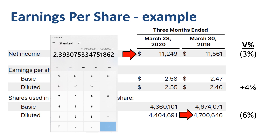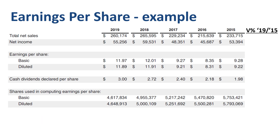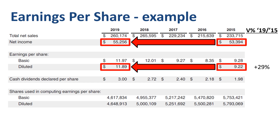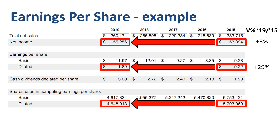Let's do the same EPS analysis for a 5-year period. Here's a 5-year overview of key Apple financial indicators. From 2015 to 2019, earnings per share increased from $9.22 to $11.89 for a full year — a total increase of 29%. Where does the EPS increase come from? Net income increased from $53.4 billion to $55.3 billion, just 3% in total over the 5-year period. The number of shares dropped from 5.8 billion to 4.6 billion, a decrease of 20%. So substantially all of the EPS improvement came from the denominator — the number of shares — rather than the numerator, net income.